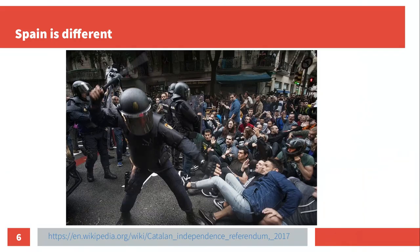There's a famous phrase in Spain that says 'Spain is different.' In Catalonia, 70% of the population wanted to have a referendum on the 1st of October, and the answer of the Spanish state was this — you can see peaceful protesters sitting on the street trying to block the police from shutting down a polling station, and police beating them up. In comparison, you have the Scottish referendum in 2014, which was agreed between the UK government and the Scottish government. It seems that in Spain, political problems are treated differently.